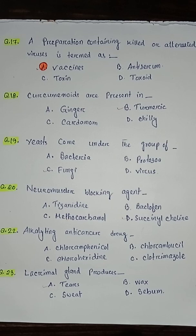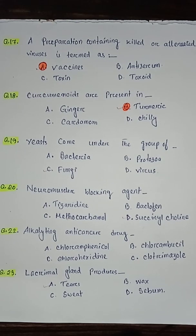Question number eighteen: curcuminoids are present in — option A ginger, option B turmeric, option C cardamom, option D sily. So the correct answer is option B turmeric. Question number nineteen: yeast comes under the group of — option A bacteria, option B protozoa, option C fungi, option D virus. So the correct answer is option C fungi.